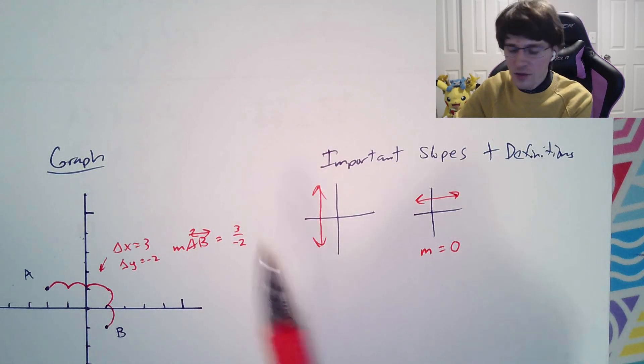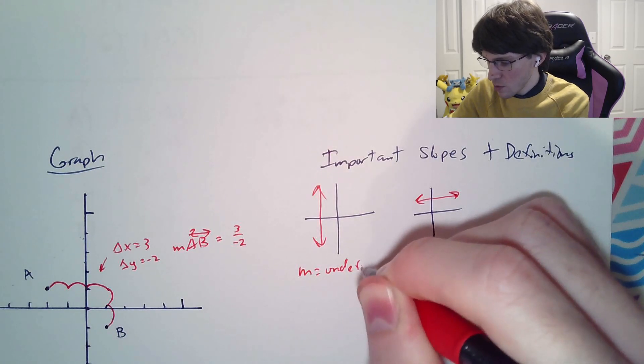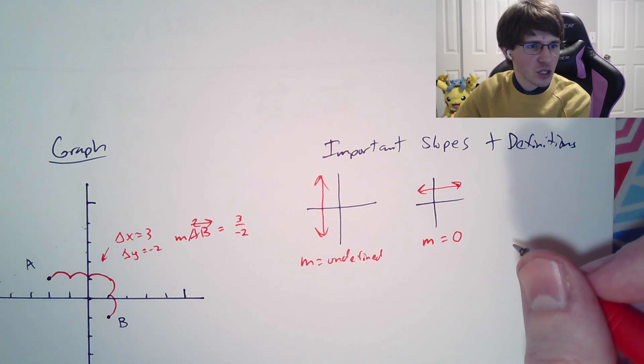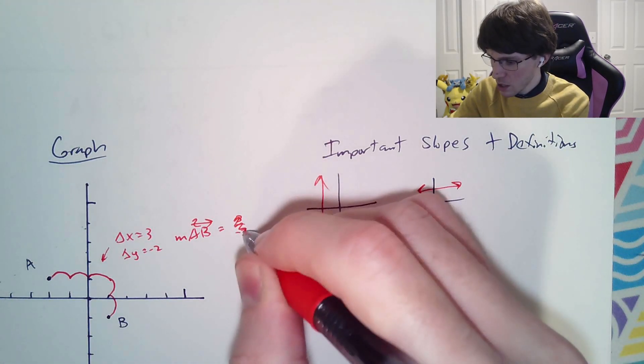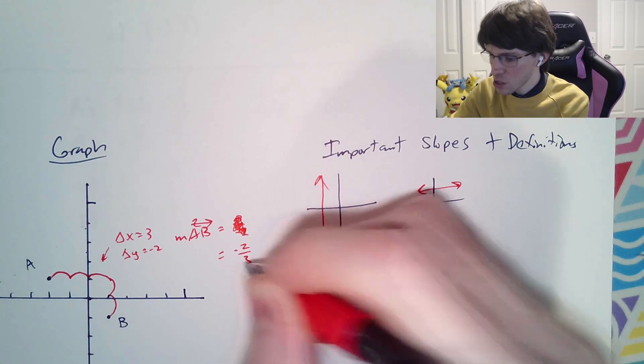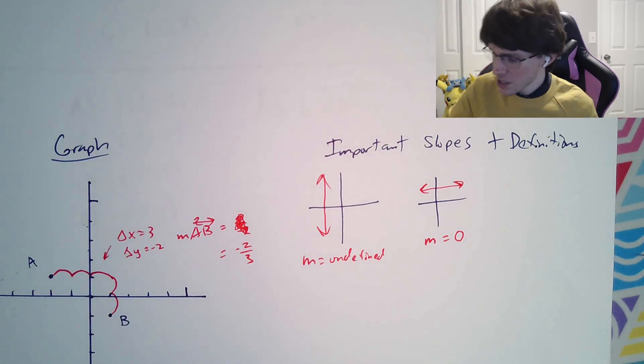On the other hand, these ones, the slope we would say is undefined. The reason why it is undefined is because any time you calculate the formula, the change in x, which is on the bottom, and by the way, I totally messed this problem up. Negative 2 over 3, change in y over the change in x. I messed that one up. Had to fix it.